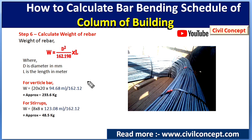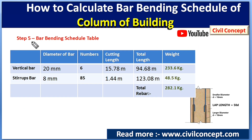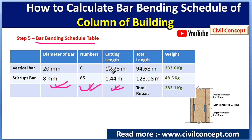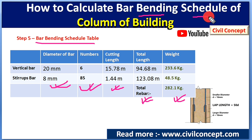The final BBS table shows diameter, number, cutting length, total length, and weight of rebar for both longitudinal bars and stirrups of the column. Next time, I will show the bar bending schedule for a slab. Please like this video and subscribe to the channel for new updates about civil engineering. Thank you.